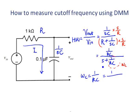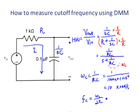So 1 over RC is 1 over 1000 ohms times 0.1 microfarad, which is 10,000 radians per second. To calculate the cutoff frequency in hertz, we use omega-c divided by 2 pi. 10,000 over 2 pi is 1.59 kHz. So theoretically, the cutoff frequency should be 1.59 kHz.